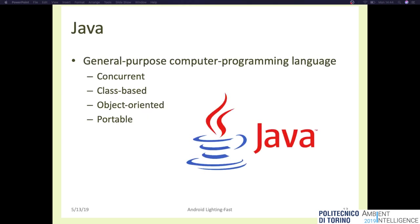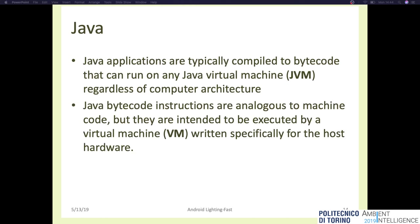One design goal of Java is portability, which means that programs written in Java must run similarly on any combination of hardware and operating systems. This is achieved by compiling Java language code to an intermediate representation named Java bytecode. Java bytecode is not native machine code but is intended to be executed by a virtual machine written specifically for the host platform.